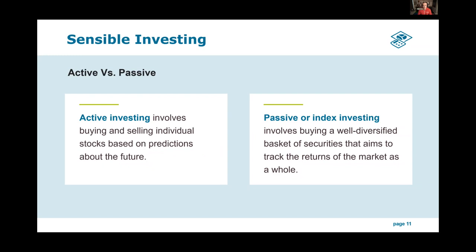In broad terms, there are two ways to think about investing in financial markets. You can take an active approach, which means you're going to guess and predict which stocks to hold and when to hold them. This approach implicitly assumes that you have better information than the market — that despite all the information contained in prices, you have an informational advantage you can act on to make profits. Active investing means taking the position that prices are wrong and that because you have missing information, you can earn excess returns.